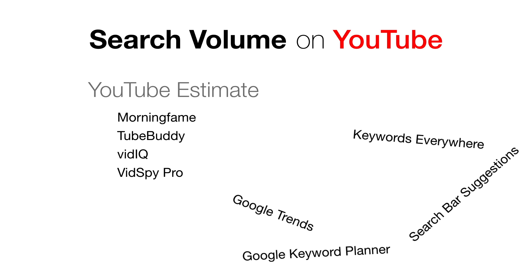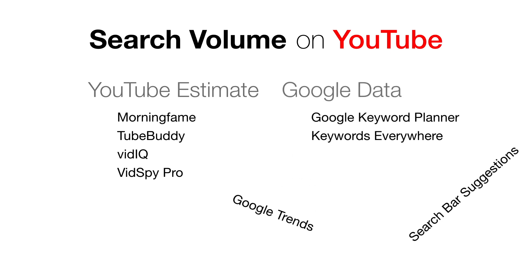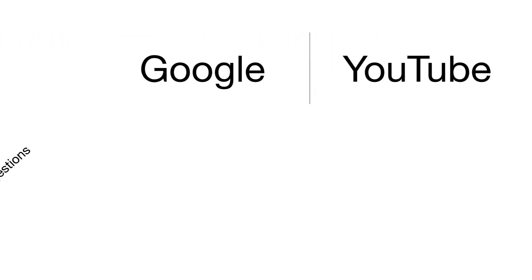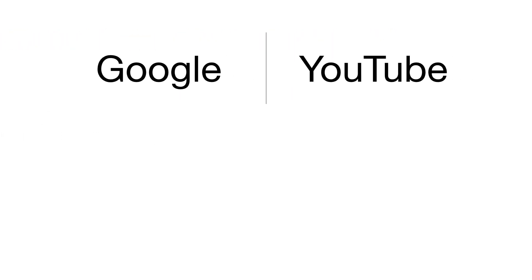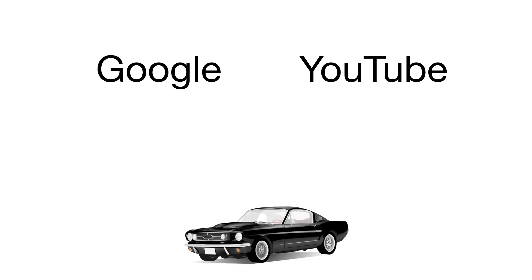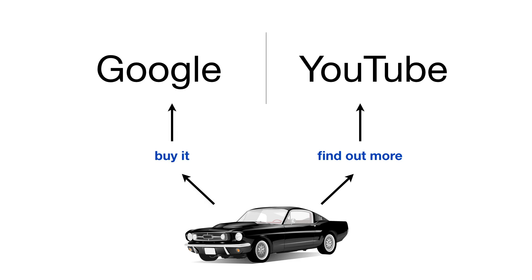Then there are tools that use Google search volume data. They are great because they have real search volume data, but keep in mind that Google is not the same as YouTube. Search behavior is different on both search engines. For example, if people want to find out more about a car, watching a video on YouTube makes more sense. And if they actually want to buy the car, then searching for a dealership on Google makes more sense. Two search engines for different purposes, really.